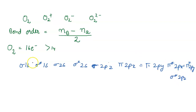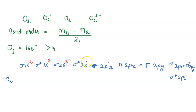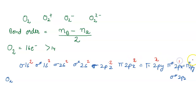Now we fill in the electrons for O2. Counting through the molecular orbitals, we place all 16 electrons: 2, 2, 2, 2, 2, then distributing through pi 2px, pi 2py, pi* 2px, pi* 2py, and sigma* 2pz, reaching a total of 16 electrons filled.